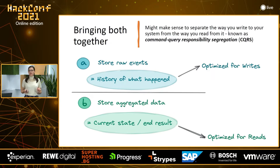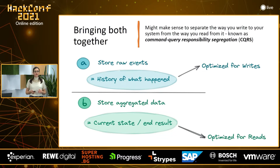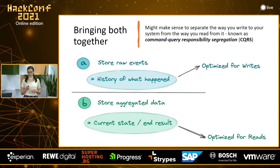You might have heard the term materialized view in combination with event sourcing. You could be keeping checkpoints of your event store so that you don't need to replay the whole history every time. In a lot of situations, it makes sense to separate the way you write to your system from the way you read from it. This pattern is known as Command Query Responsibility Segregation, or CQRS.